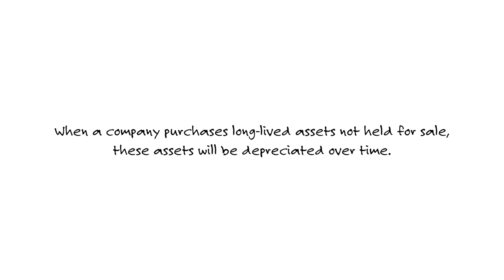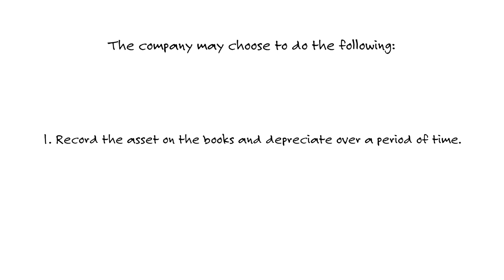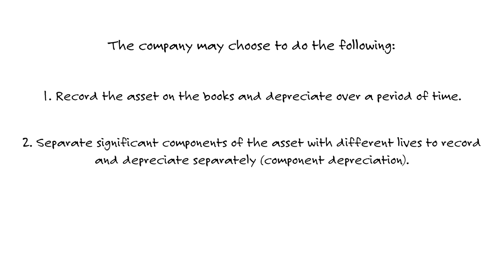When a company purchases long-lived assets — PP&E — so long as it's not for sale, it's going to be depreciated over time. Step one: record the asset on the books and depreciate it over a period of time. You could have separate components within a particular asset. US GAAP allows but doesn't require separating significant components with different lives and recording depreciation separately for each. That's required under IFRS, but under US GAAP it's optional and rarely done.